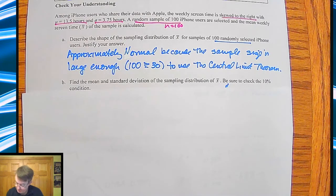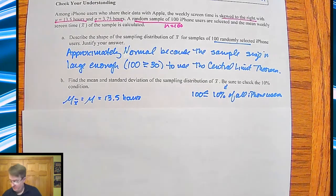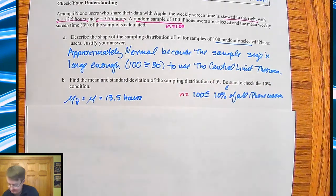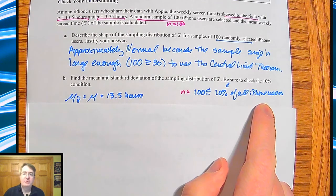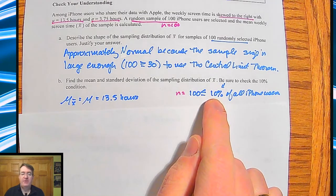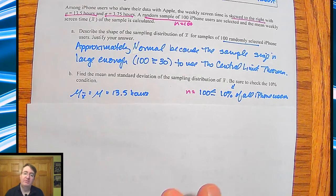Question two. Find the mean and standard deviation of the sample distributions of x-bar. Be sure to show the 10% condition. We need to be able to show the 10% condition to show that we don't have to worry about things not being replaced. N equals 100, which is less than or equal to 10% of all iPhone users. So that means that if 100 was 10% of all the iPhone users, then we would only have 1,000 iPhone users. And we know that we'd have a lot more than 1,000.